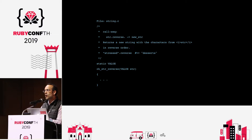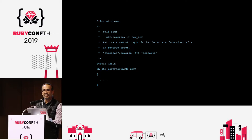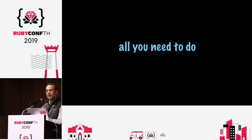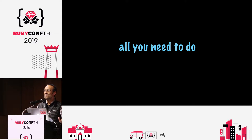At a high level, the rb_str_reverse function uses pointers to basically swap out and reverse a string by copying characters from the beginning and the end and switching them out. In doing so, it needs to calculate the length of each character that it's intended to copy. The Ruby 2.5.1 build-Ruby-from-source guide basically says you have to do three things: configure, make, install.